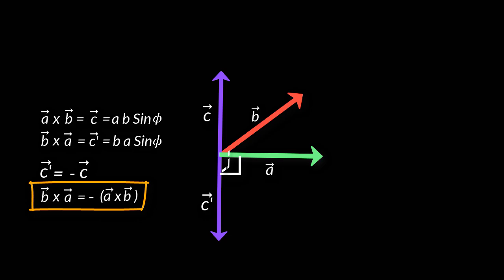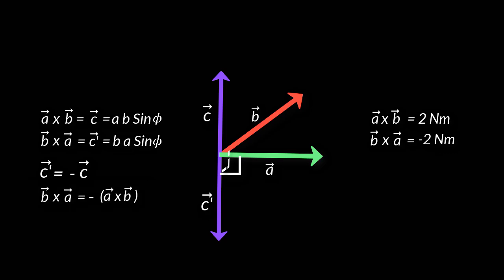So if someone told you that A cross B is 2 Newton meter and asked what B cross A would be, you can quickly say it will be minus 2 Newton meter perpendicular to the plane of vectors A and B. We can also find the cross product if the vectors are given in i, j, k notation.